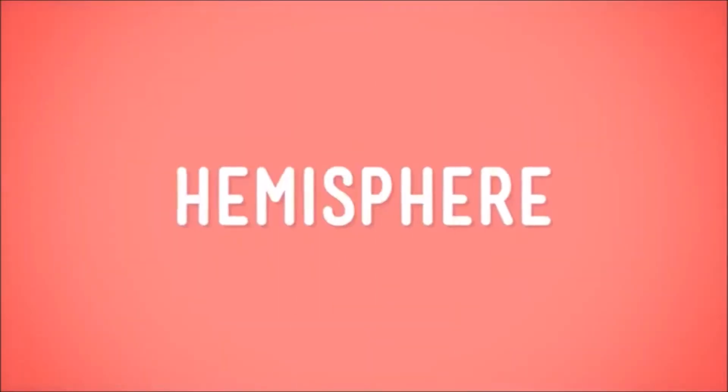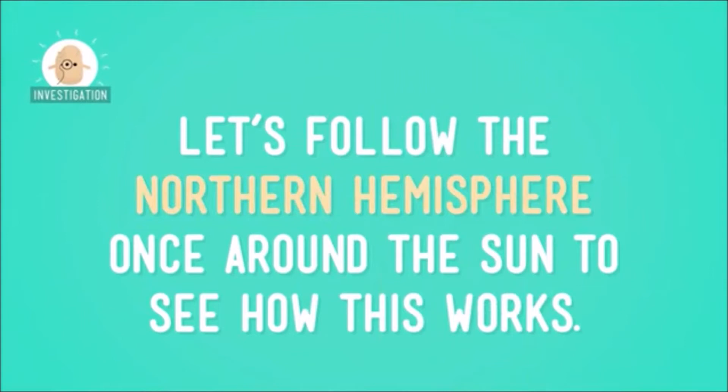Since the Earth is tilted, for part of the year, one of the hemispheres, which is half of the Earth, is leaning toward the sun, and the other part of the year, it's leaning away. Let's follow the northern hemisphere once around the sun to see how this works.